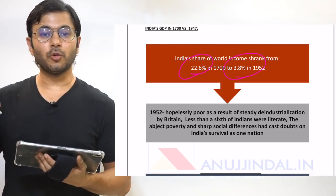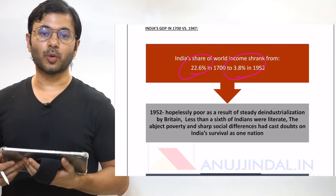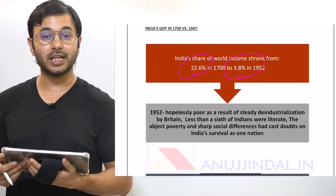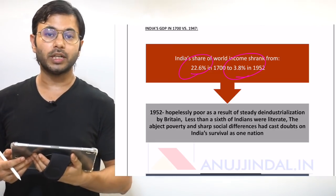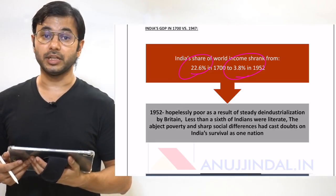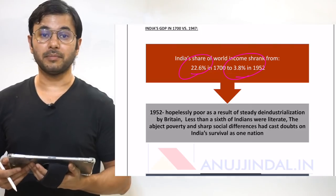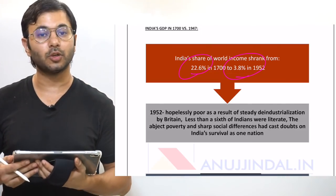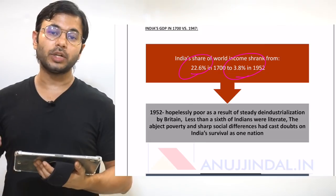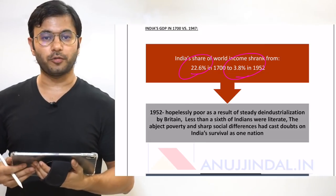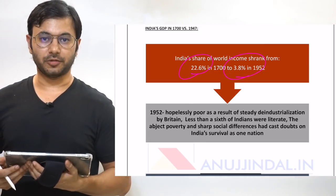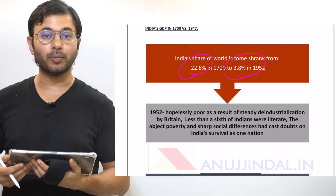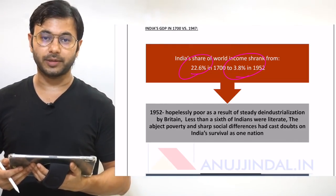The drain of wealth theory was provided by Dadabhai Naoroji, who said that the Britishers looted India by earning revenue but draining that wealth out of India towards their own country. At the time of independence, only one-sixth of India — that is 16% — was literate, and the majority of the population was in the clutches of poverty.